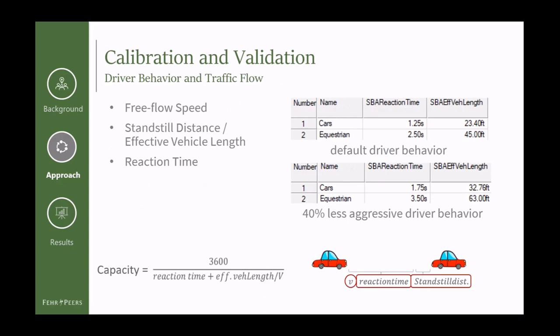We did extensive calibration and validation for our model. For free flow speed, we started with posted speeds in Portola Valley and also looked at big data source INRIX to refine our free flow speeds, since the area is mountainous with many winding roads and we expected people to drive slower than posted speeds. We also input different reaction times and effective vehicle lengths for different vehicles — the car group for resident and employee trips, and the equestrian group for equestrian trailer trips. We also input different reaction times and effective vehicle lengths for our two roadway capacity scenarios: default driver behavior and 40% less aggressive driver behavior, accounting for behavioral changes due to the evacuation.